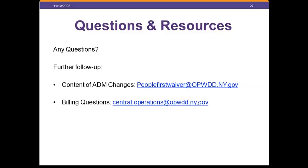A frequently asked question: is EVV (electronic visit verification) required for Community HAB? Community HAB and in-home respite are the two service types subject to EVV in the OPWDD system. We are investigating whether there is any exclusion based on certified residential locations, though that is not likely to come to fruition. EVV has been the rule for several years, and providers delivering Community HAB or in-home respite should be up to date on those requirements. We will confirm with more investigation.